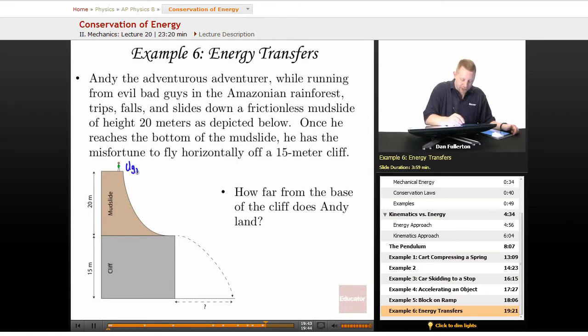So he has gravitational potential energy up here. As he slides down, all of that's going to be converted into kinetic energy, and he's going to be moving completely horizontally, so he'll have a velocity here corresponding to his kinetic energy. And at that point, he becomes a projectile. How far from the base of the cliff does Andy land?